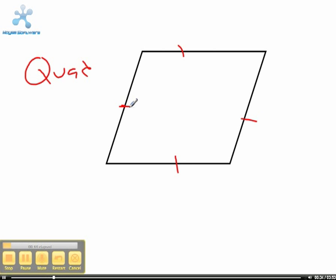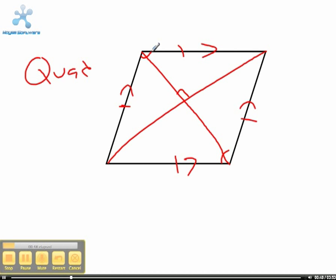It has two sets of parallel sides. The diagonals form right angles at their intersection, and the opposite angles are congruent. Also, the diagonals bisect each other, and the diagonals bisect the vertices.